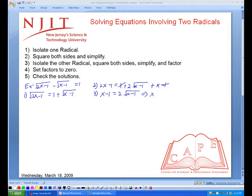After squaring both sides, we're going to get x squared minus 2x plus 1 equals 4 times x minus 1. And then simplifying, we're going to get x squared minus 2x plus 1 equals 4x minus 4, which gives us x squared minus 6x plus 5 equals 0.